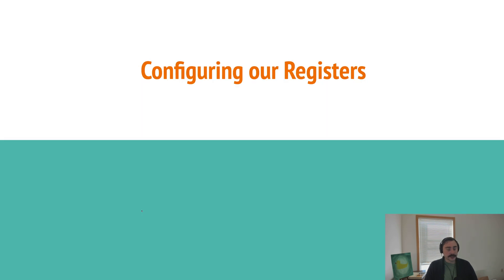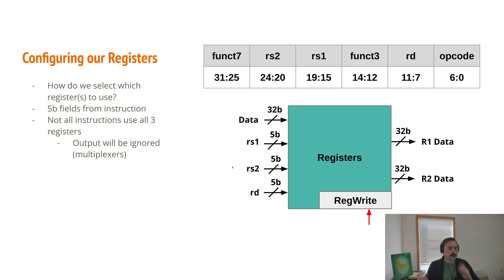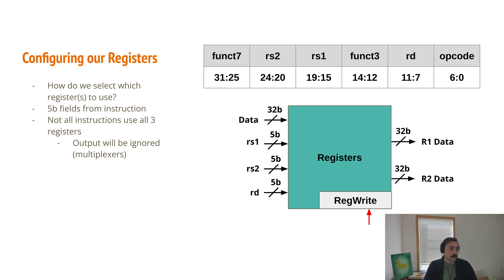The next thing we'll talk about is configuring our registers and how we access our register file. We show arrows going into our register file for RS1, RS2, and RD for destination if we're storing something. Each of these lines for RS1, RS2, and RD are going to be 5 bits — 5 bits because we have 32 different registers to choose from, 0 to 31, so we need 5 bits to index all of them. Those 5 bits for each of these are coming from our instruction. For example, in an R-type instruction, RS2 is bits 24 to 20, RS1 is bits 19 through 15, and RD is bits 11 through 7. So RS1 is getting bits 19 through 15 from our instruction.